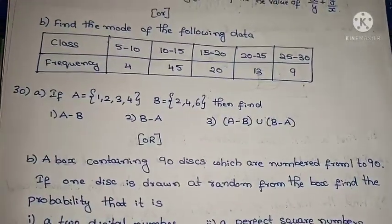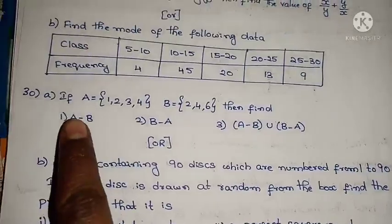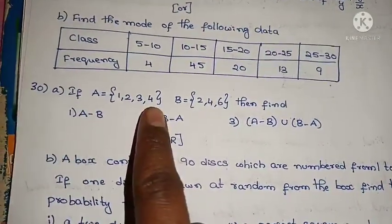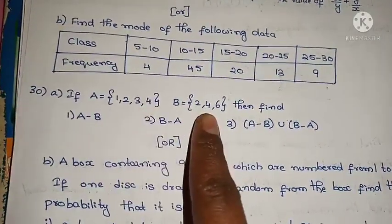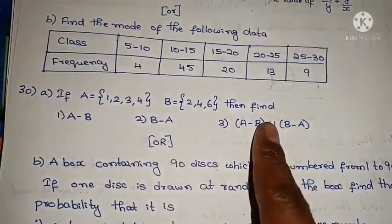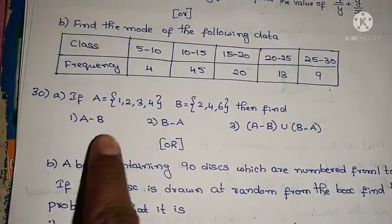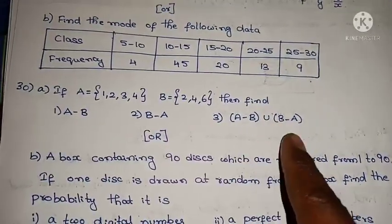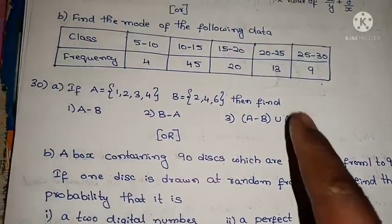The 30th problem: A equals to {1 to 34}, B equals to {2, 4, 6}. Then find A minus B, B minus A, and (A minus B) union (B minus A).